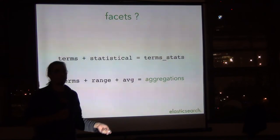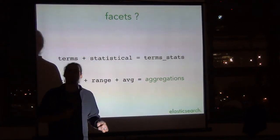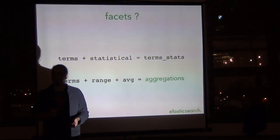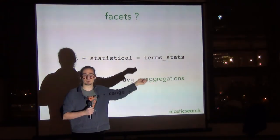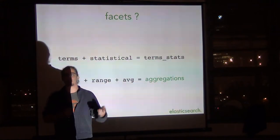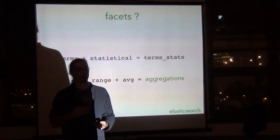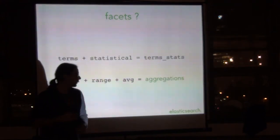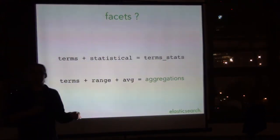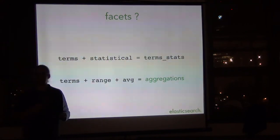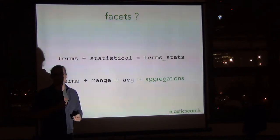Aggregations is a way to take facets and make them composable, the same way that you compose queries. If you saw earlier, I used a bool query, and inside of that I used a multi-match query and the match query — it's the same idea here with aggregations. So let's see how it works, and if we have time at the end I'll actually show a real life demo because this is a little dry, I admit.